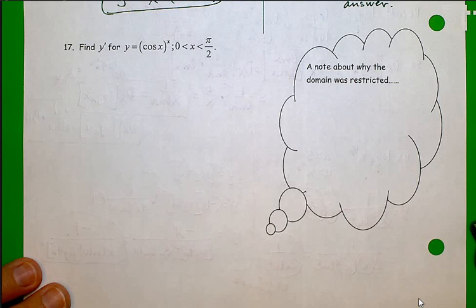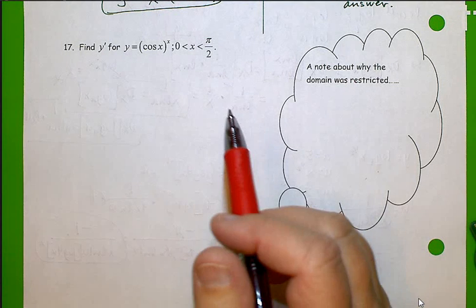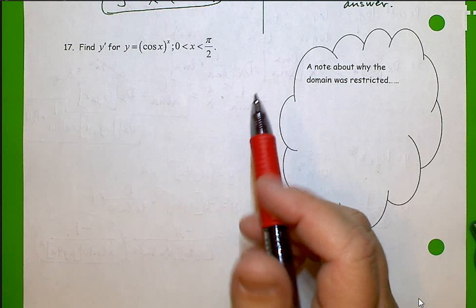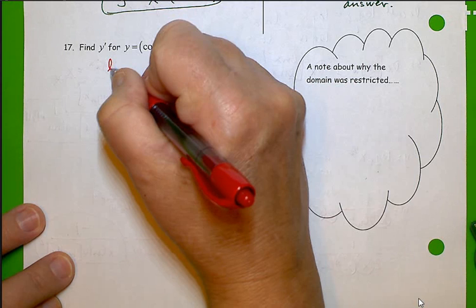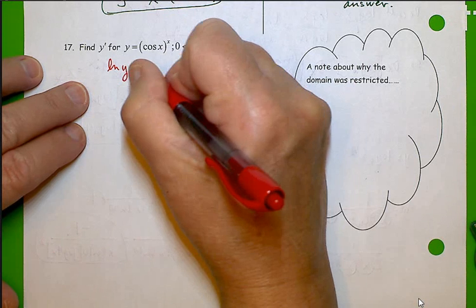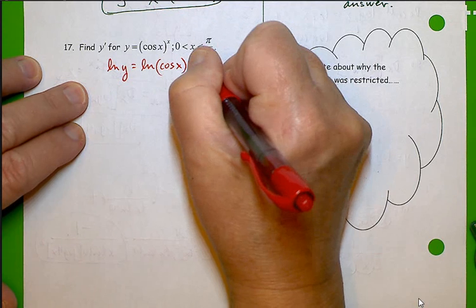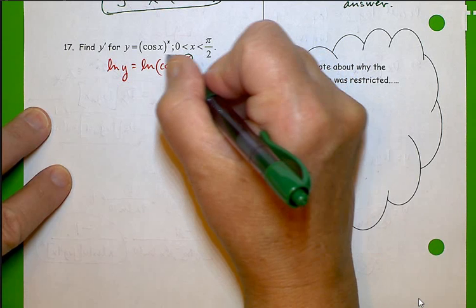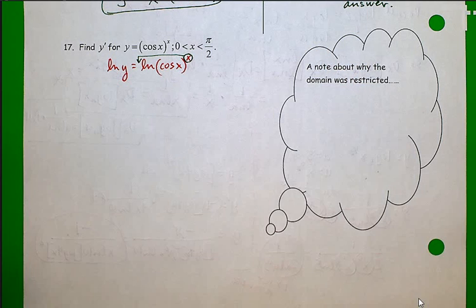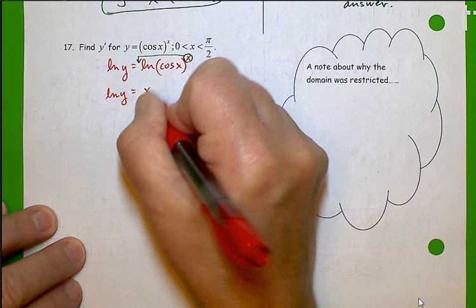So if we follow the steps that we have for logarithmic differentiation, you know that the first step is to take the natural log of both sides. So I get natural log of y equals natural log of cosine x raised to the x power. The reason why we did that is so that could move down in front, which is step 2. Natural log of y equals x times natural log of cosine x.